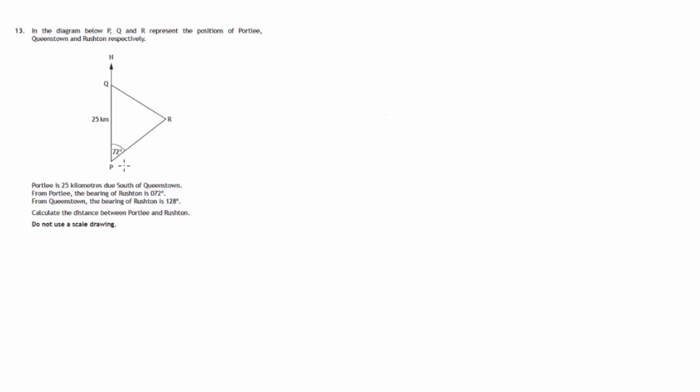We're told that R is on a bearing of 72 degrees from P. We're also told in the description that R is on a bearing of 128 degrees from Q. We're asked to find the length of side PR, the distance between these two places.